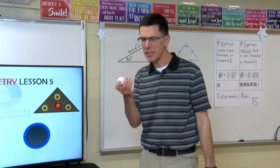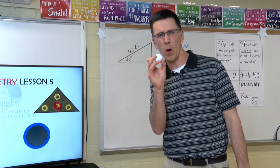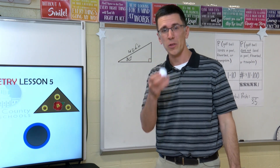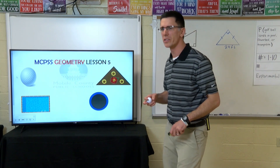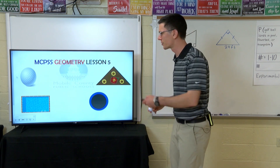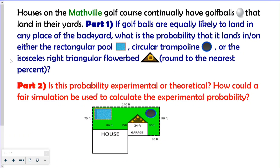So I got to thinking, what would be the probability of this golf ball landing in those three things I just talked about? The pool in my backyard, the trampoline in my backyard, or the flower bed. Let's go ahead and look at the problem today. The golfers in Mathville are really good math-minded people, but they're not very good golfers. The houses on the Mathville golf course continually have golf balls that land in their yards. If it is equally likely that the golf ball could land in any place in the backyard, what is the probability that it lands in or on the rectangular pool, the circular trampoline, or the isosceles right triangular flower bed?